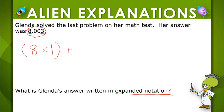Then there's a 3 in the 1,000's place, so we want to write 3 times 1,000. How do I write 1,000 as a decimal? Which answer choice is correct?